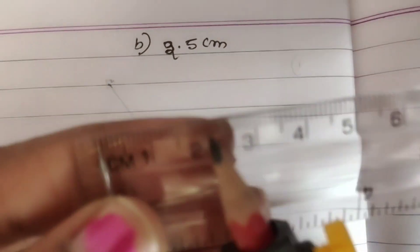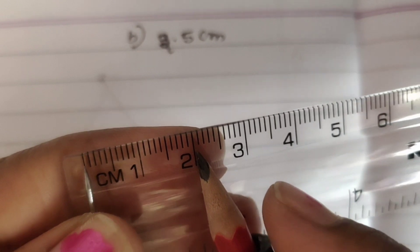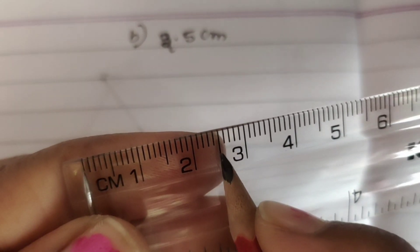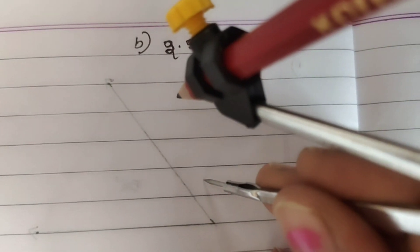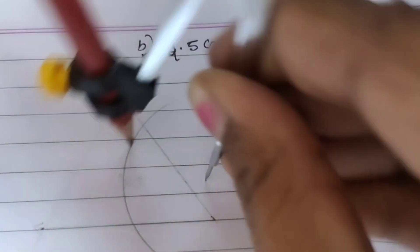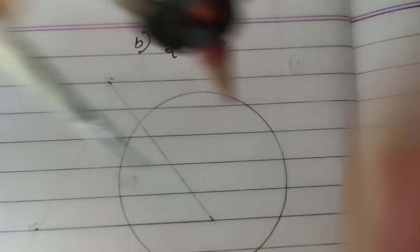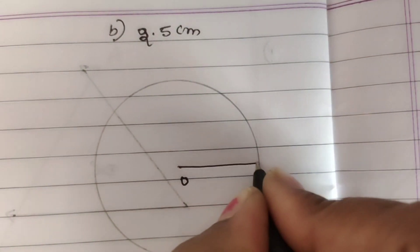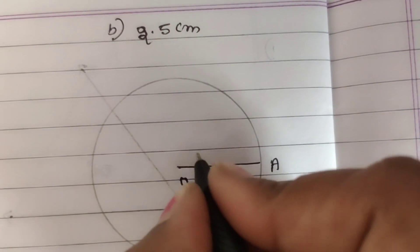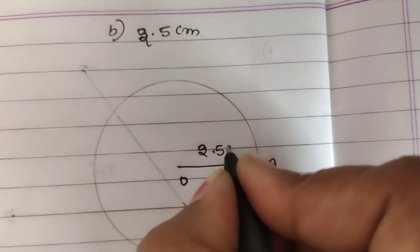This is the 2 cm circle. Now join O and P. Next, 2.5 cm. This is the measurement of 2.5 cm.